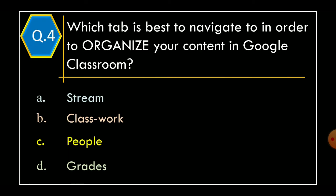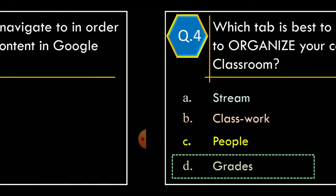Question 4: Which Tab is best to navigate to in order to organize your content in Google Classroom? Option A: Stream, Option B: Classwork, Option C: People, Option D: Grades.